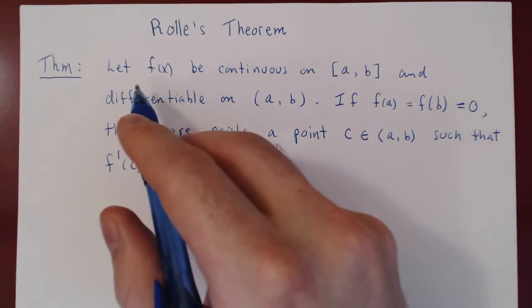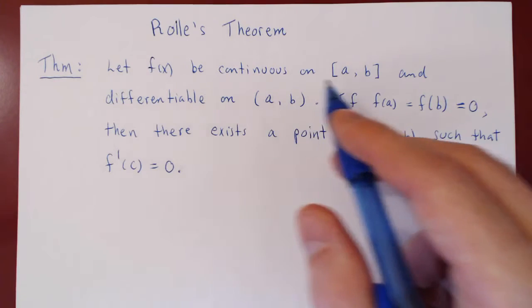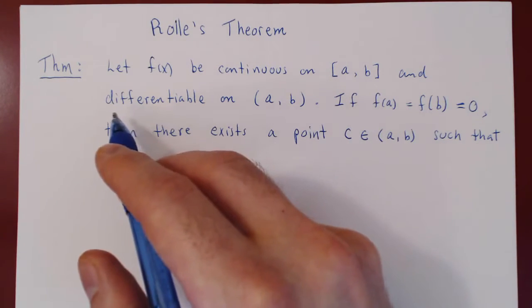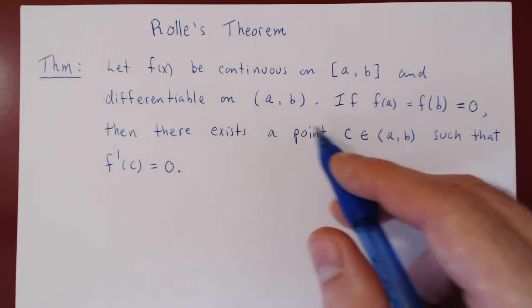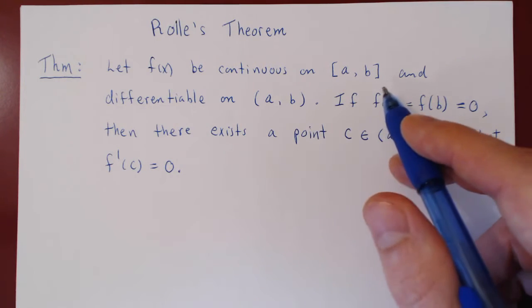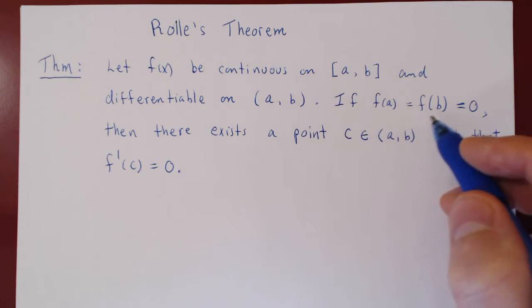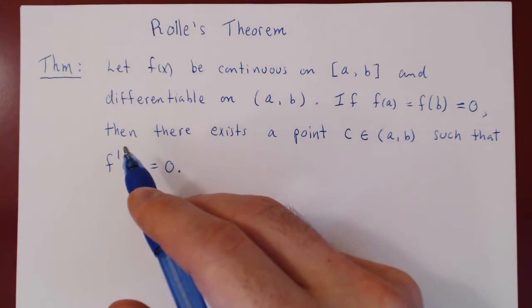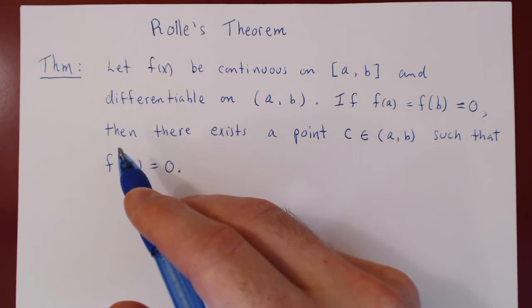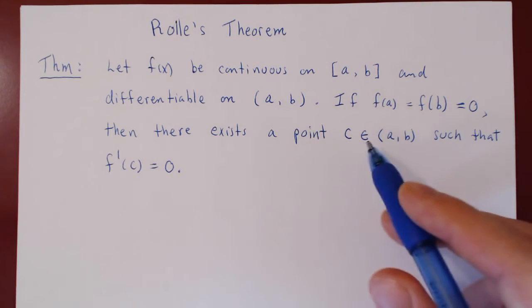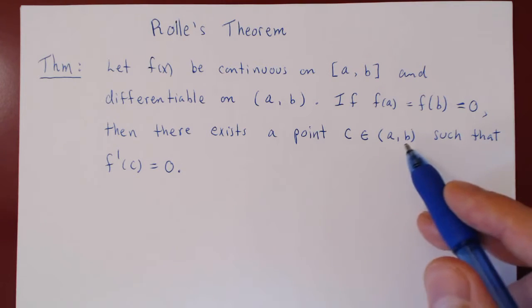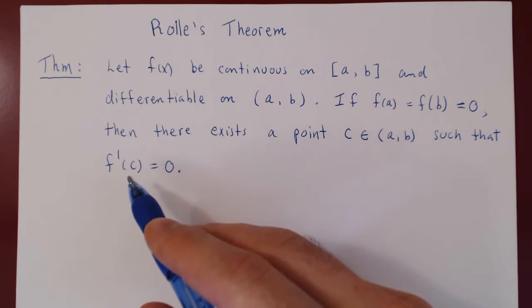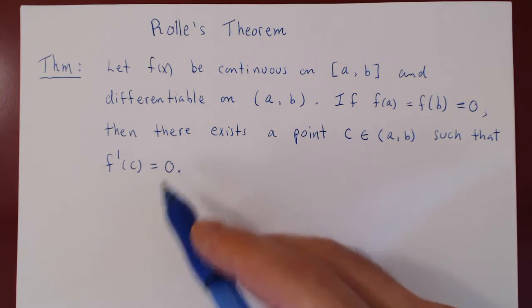So again, we have three assumptions: f(x) is continuous on the closed and bounded interval [a, b]; f(x) is differentiable on the open interval (a, b); and we assume that the value of f at x = a and x = b is the same, and that value is 0. Then the conclusion is that there must exist a point c in (a, b) such that f'(c) = 0 — so at x = c, the curve is flat.